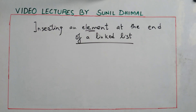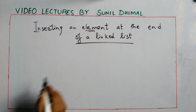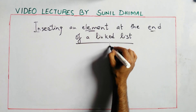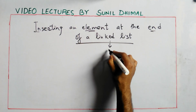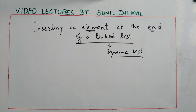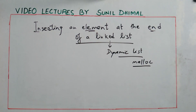Welcome to all of you. In this lecture, we will be talking about the insertion of a new node or element at the end of the linked list. A linked list is a dynamic list wherein you can add or delete an element as and when required using dynamic memory allocation and the malloc function, as seen in the last lecture. It is much easier to insert or delete an element from a linked list compared to an array.